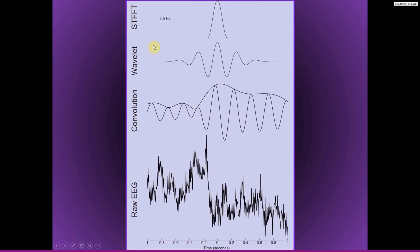When you're doing a short-time Fourier transform, let's say, so in this example, let's say we're doing a short-time Fourier transform versus wavelet convolution to look at activity at 3.5 Hz within a 300 ms window in this time series.